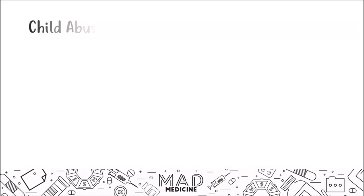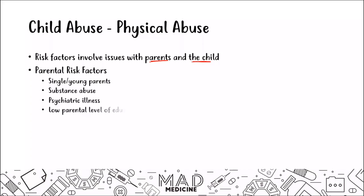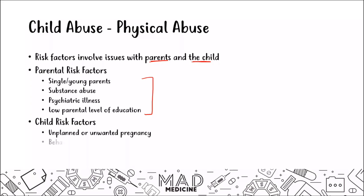Risk factors for physical abuse fall into two categories: parental and child-related. Parental risk factors include being a single or very young parent, having a history of substance abuse or psychiatric illness, and having low levels of education. Child risk factors include an unplanned or unwanted pregnancy, behavioral issues, and learning disabilities — children with learning disabilities are often very difficult to work with, raising the risk of physical abuse.